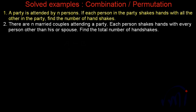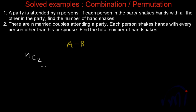The first problem says: a party is attended by n persons. If each person in the party shakes hand with all the others, find the number of handshakes. We are going to find a combination because if we have two people A and B, they shake hands with each other — irrespective of who makes the initiative — that is counted as one handshake. So nc2 will be the number of handshakes between n number of people.